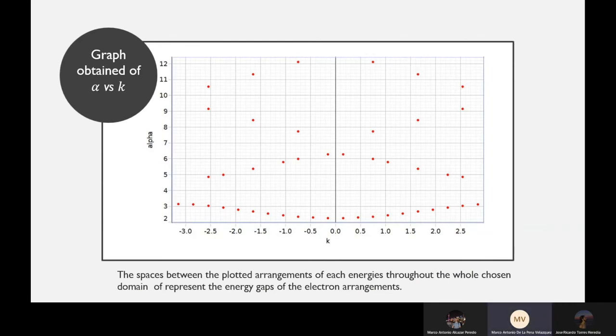We then made this graph obtained from our program and we made a graph for alpha with respect to k. In this case, we can see that it is like if there were four functions. This is because the part of the bottom looks like one function and the part above looks like another function. This is because we use four values of e.